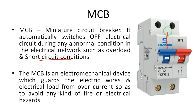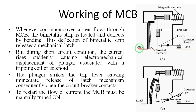Here is the input line and output line. This component is called the magnetic element. This is the trip bar, this is the latch, and these are the closed contacts. The main component is the bimetal element. The line current passes through the line, and due to the closed contacts, the current passes through the magnetic element to the load.